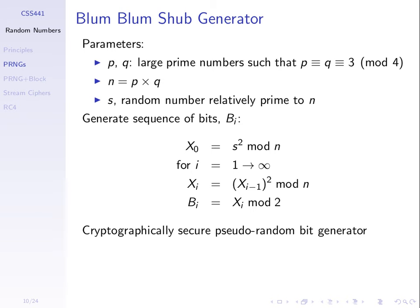We generate a large n from two large primes multiplied together, and choose another random number smaller than n. The initial output x₀ is s squared mod n, similar to the LCG algorithm. Then you continue: take the previous value x_{i-1}, square it, mod by n, and you get the next value. You start with some random number s, square it, mod by n to get the next value, then square that, mod by n, and keep doing that. Quite easy to calculate.